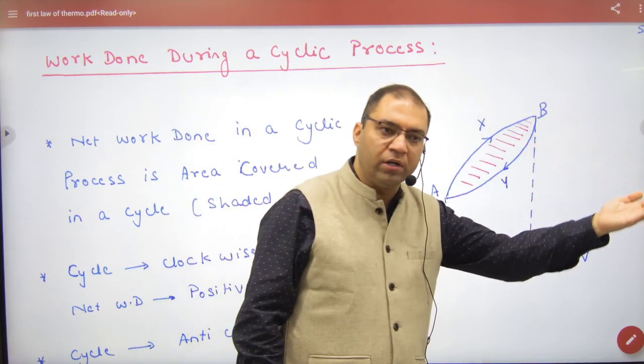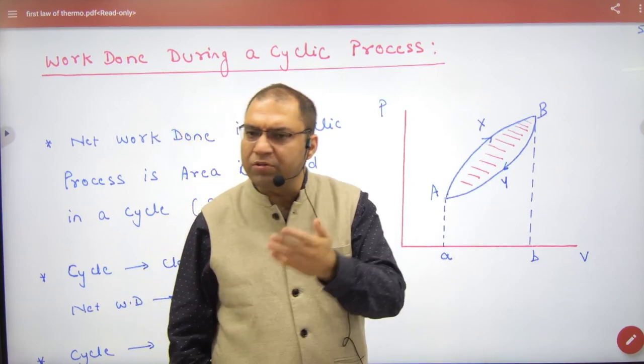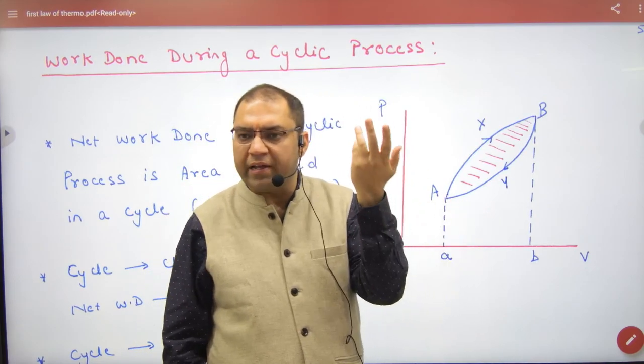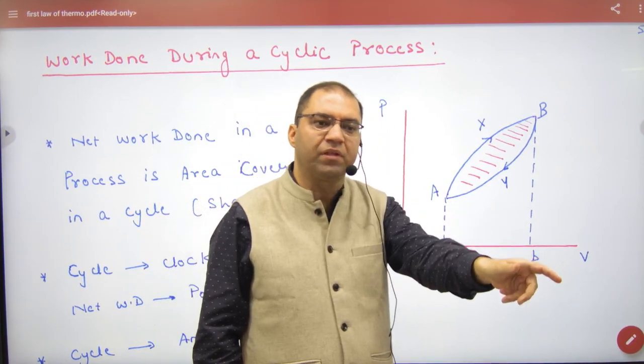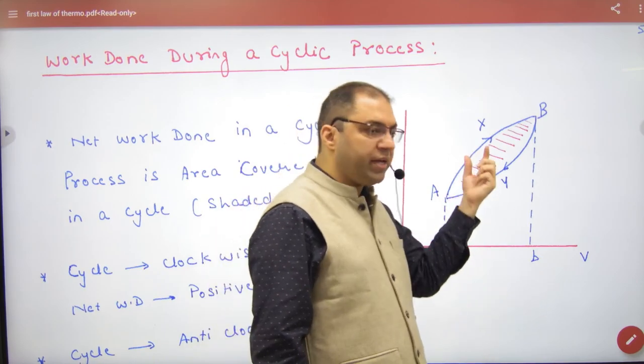Expansion and compression - you have heard in chemistry that work done in a cyclic process is the area inside a cycle. The shaded area is the net amount of work done, including expansion and compression.